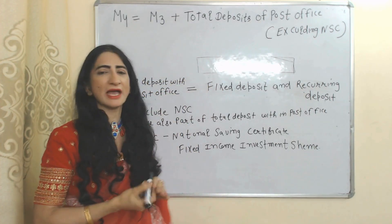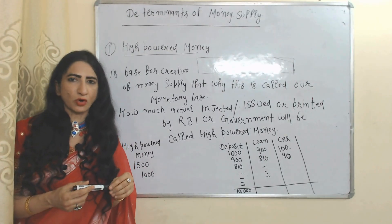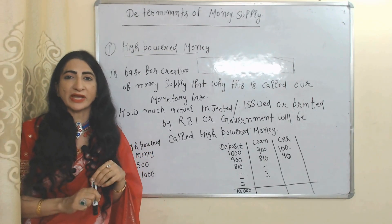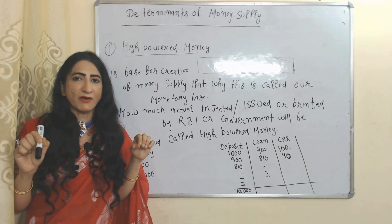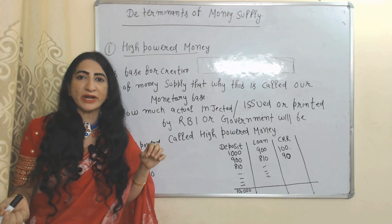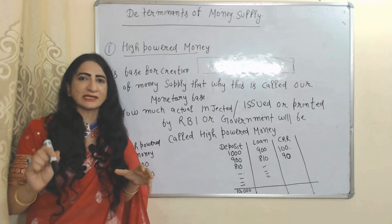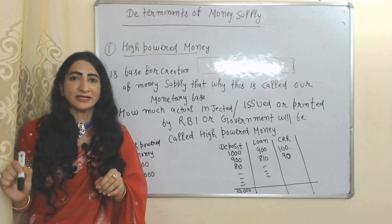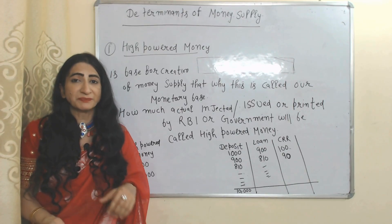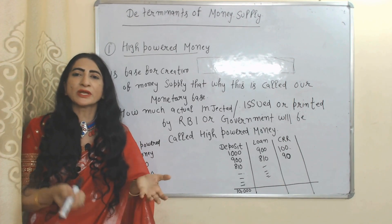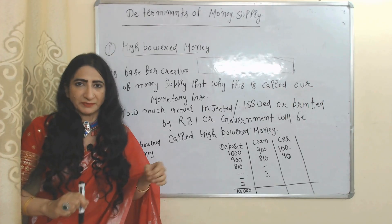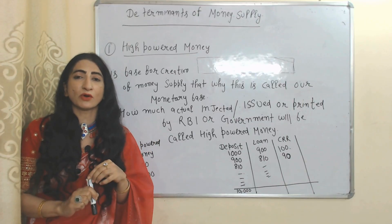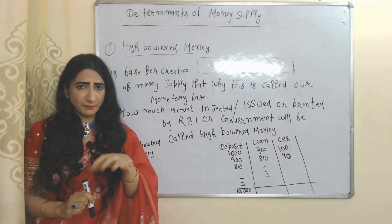Now we talk about the determinants of money supply. The first and most important determinant is high-powered money. High-powered money is the amount of money which is actually injected, issued, or printed by the RBI or the government. It forms the base for the creation of money supply and is called the monetary base.